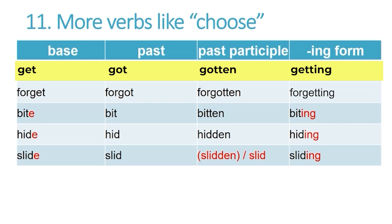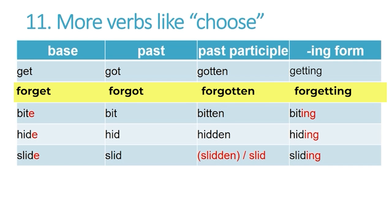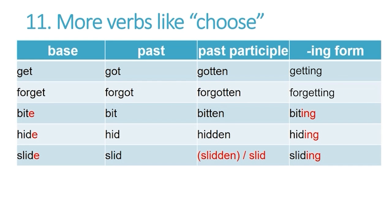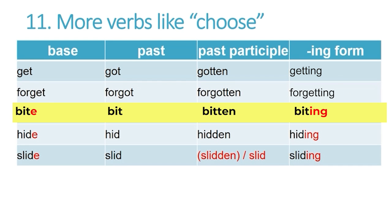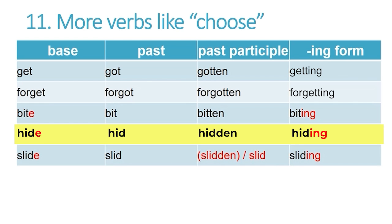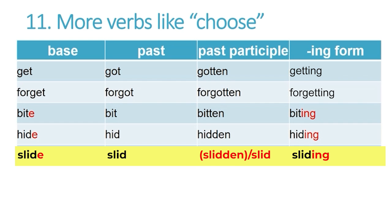Get, got, gotten. Forget, forgot, forgotten. Bite, bit, bitten. Hide, hid, hidden. And slide, slid, slid — not many people will say 'slidden.' They simply use the past and the past participle form 'slid.'